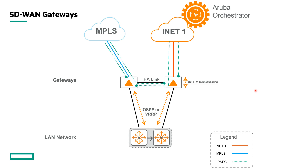Now let's look at the SD-WAN gateways specifically. At branches, the SD-WAN gateways are almost always deployed inline, meaning they are the WAN edge devices at the branch and terminate the circuits directly. This reduces the overall footprint of the branch infrastructure and simplifies the design. For high availability, larger branches are generally deployed with two EdgeConnect SD-WAN gateways, using a technology called Edge HA to provide high availability with an HA link between the EdgeConnects.